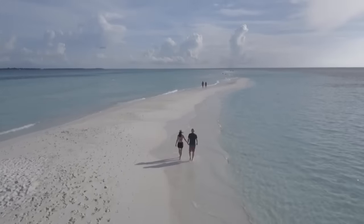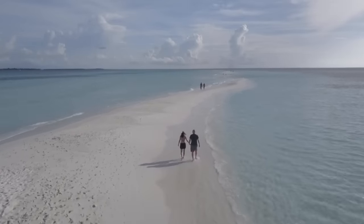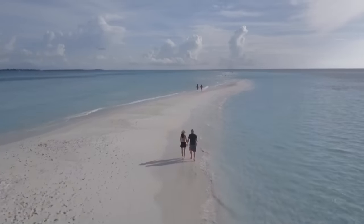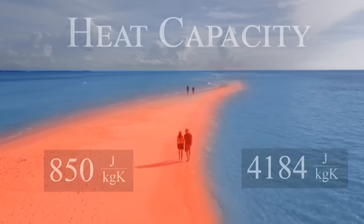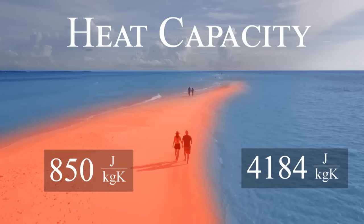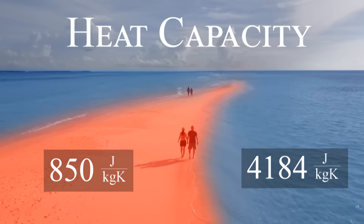Imagine a sunny day at the beach. The sun is shining on both the water and the sand. But only the sand gets really hot. This is because water has a higher heat capacity than land, and because the water is circulating.